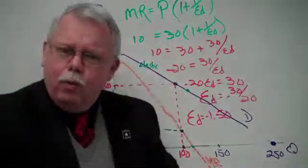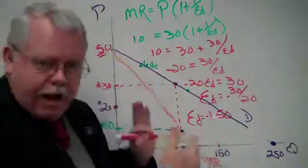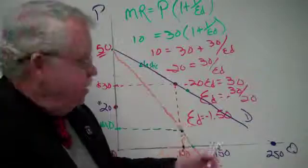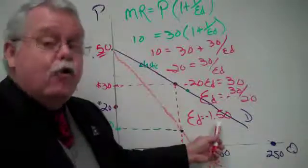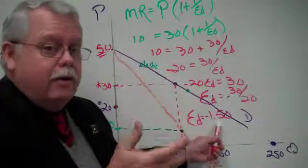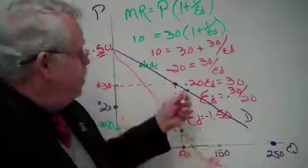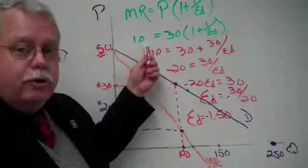And we know what? When that price elasticity of demand in absolute value, ignore the negative sign, when the price elasticity of demand is greater than 1, greater than 1.0, we're up in the elastic range.